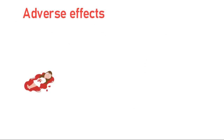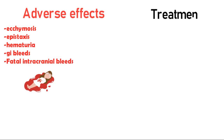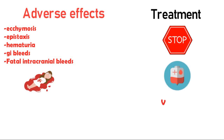Adverse effects of warfarin: the main adverse effect is bleeding, and it can range from mild ecchymosis, epistaxis which is bleeding from the nose, hematuria, and can also include internal GI bleeds, and can also lead to fatal intracranial bleeds. The treatment of bleeding associated with warfarin is done by stopping the drug and giving transfusion of blood, and we can give vitamin K therapy which is an antidote for warfarin.